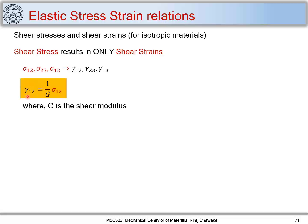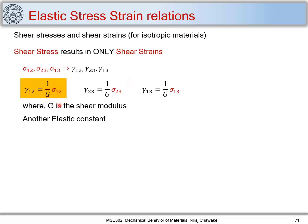For an isotropic material, I can write the shear relations using another elastic constant — the shear modulus G. The relation is: gamma 1 2 equals 1 upon G times sigma 1 2. Similarly, gamma 2 3 equals 1 upon G times sigma 2 3, and gamma 1 3 equals 1 upon G times sigma 1 3. These are the relations of shear stresses with shear strains using the elastic constant called shear modulus.